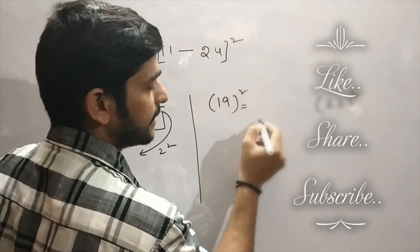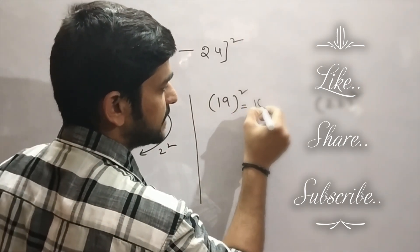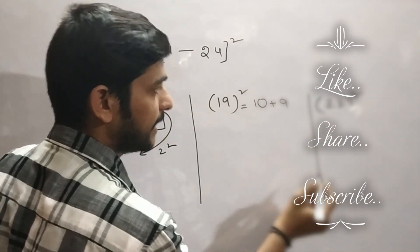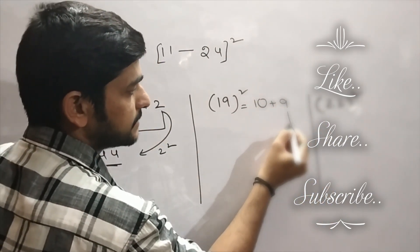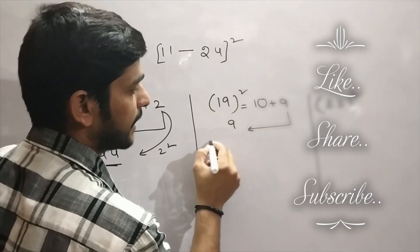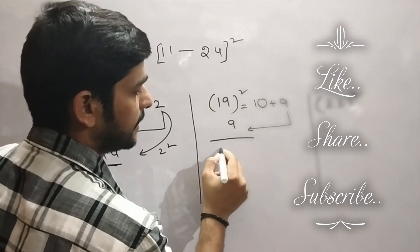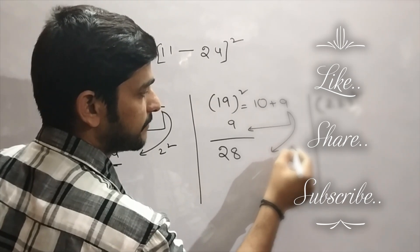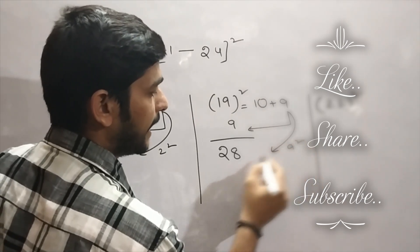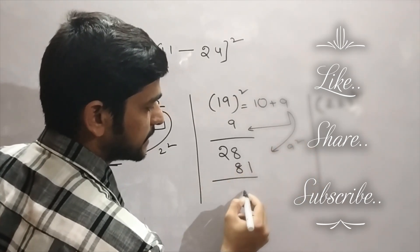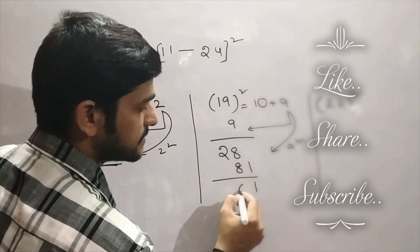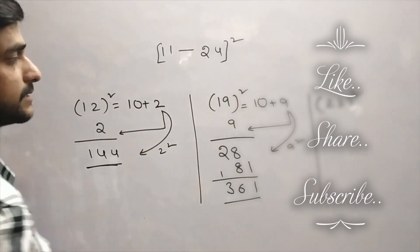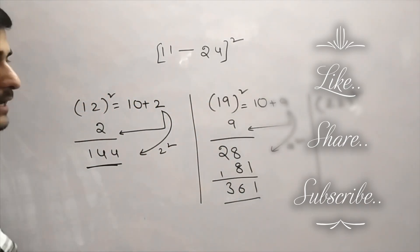Similarly, 19. Take the base as 10, and 19 is 9 greater than 10. Take this 9 and add it to 19 — here you are getting 28. And 9 squared will be 81. So 361 will be the answer for 19 squared.